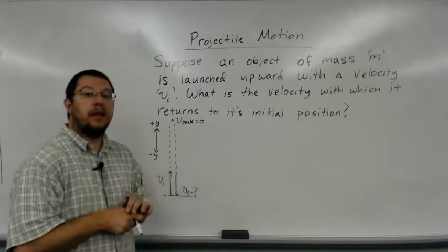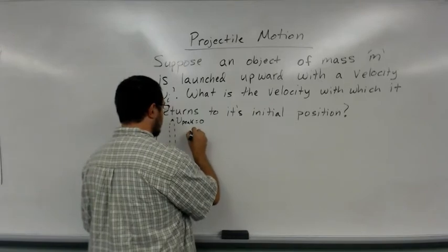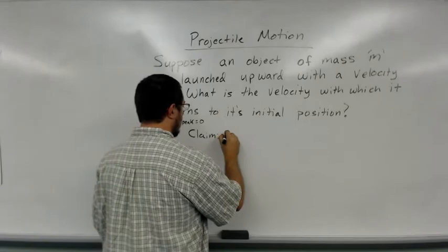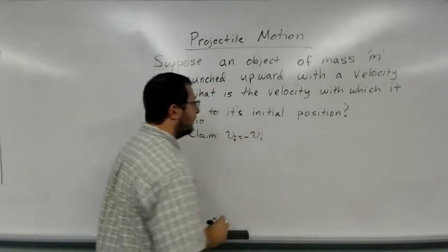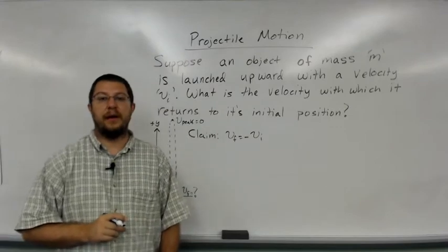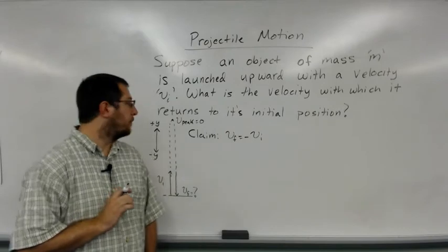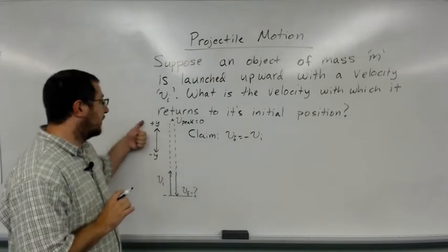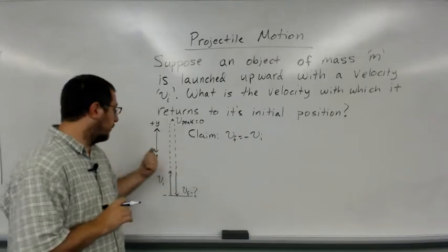Now the claim, my claim is this: the final velocity equals negative the initial velocity. I'm going to leave my coordinate system the same, so positive is in the up direction and downward is negative.